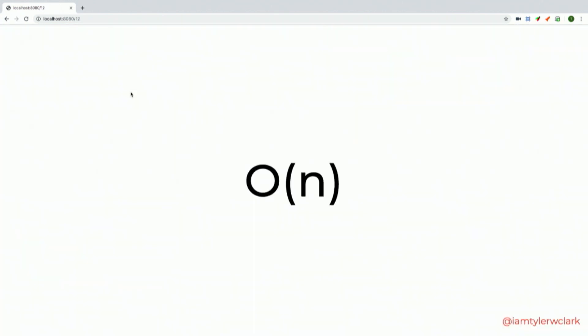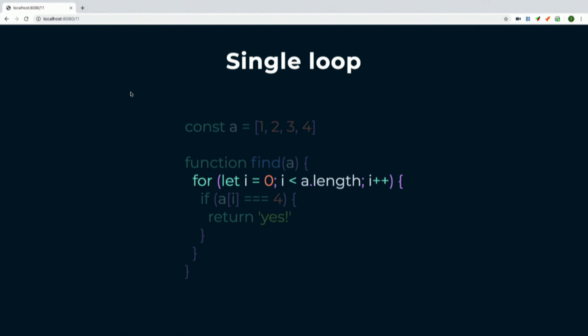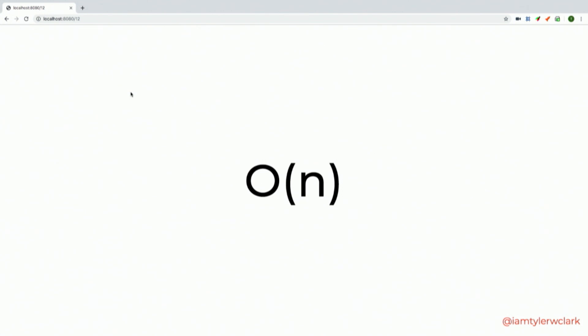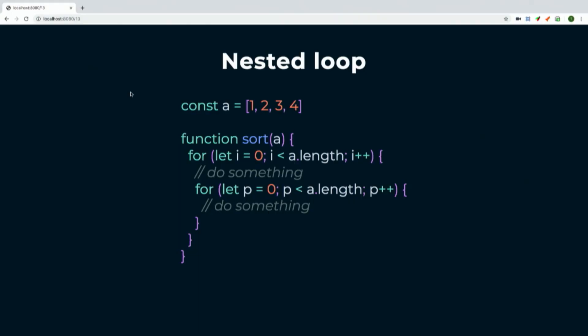What if we had a loop — a find function that loops over looking for the number four, and when found returns 'yes'? In this case four is at the very end. As our algorithm grows, the Big O notation is O(n), where n represents the number of items. However big our data set, that's potentially how long it could take for our algorithm to run to completion.